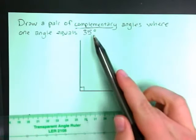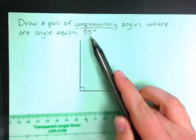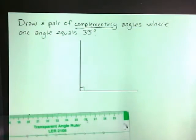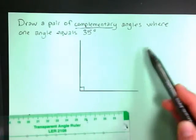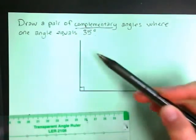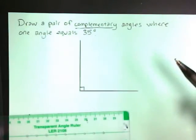And then I'm going to look back at my specific angle measurement. I want to have a 35 degree angle. So I want to make a line right here, or somewhere in here, so that it makes two different angles where one of them is 35.